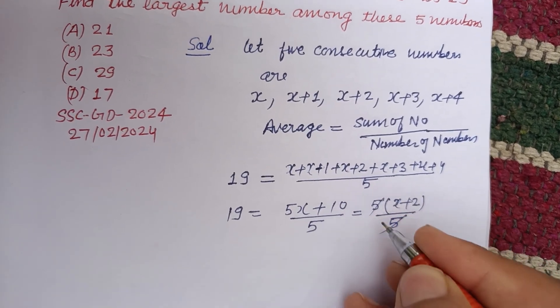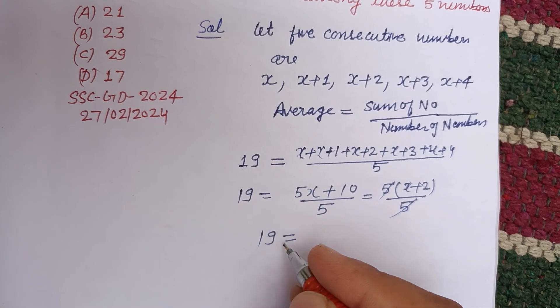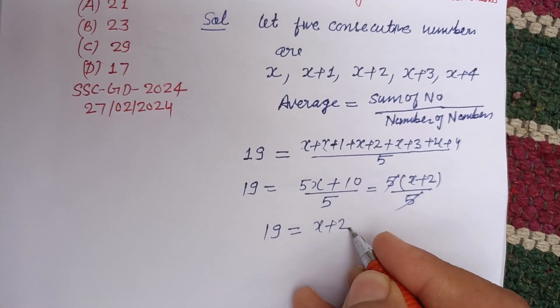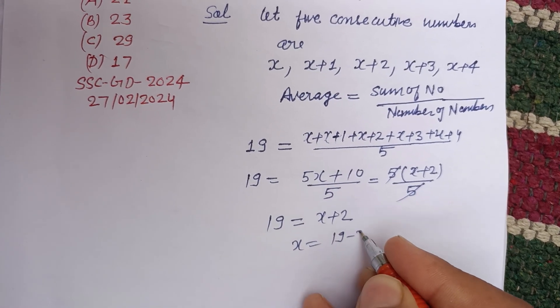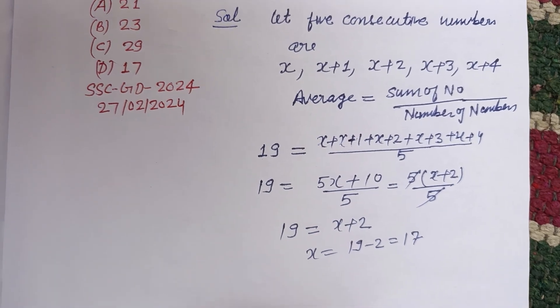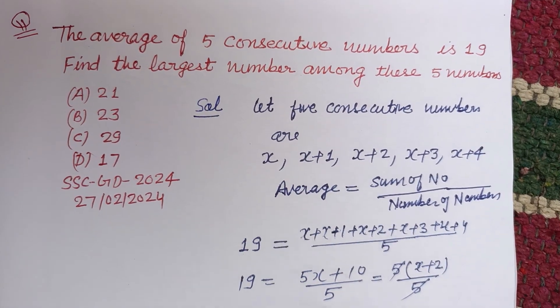The 5s cancel, we get 19 equals x plus 2, that is x equals 19 minus 2, that is 17. So the largest number among these...